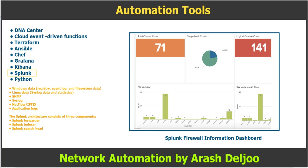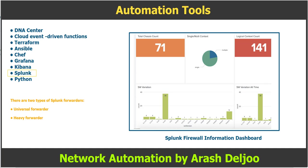The Splunk forwarder is needed only when the endpoint producing the logs does not send them automatically, as in the case of an application. In the case of a router, you could point the syslog destination directly at the indexer, bypassing the need for a forwarder. There are two types of Splunk forwarders: universal forwarder and heavy forwarder.